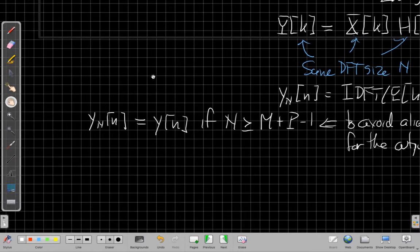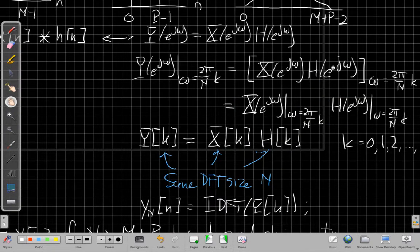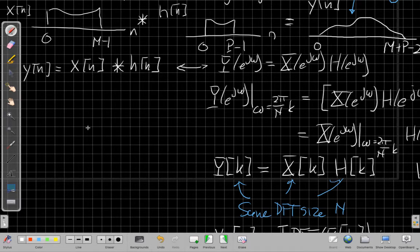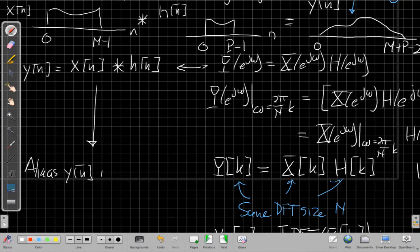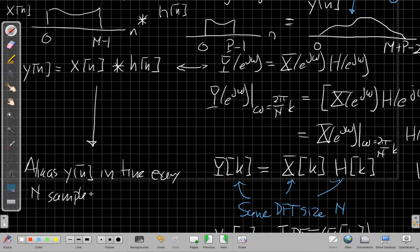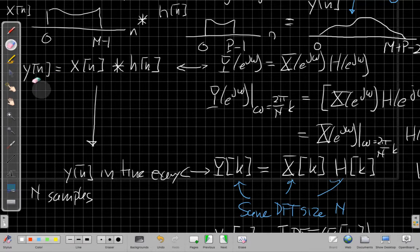When I go back to the time domain, Y_N[n] is what we get with the inverse DFT of Y[k]. The takeaway message is that the DFT-derived version Y_N[n] equals the original linear convolution Y[n] if N is greater than M plus P minus 1. This is to avoid aliasing in time to the output.